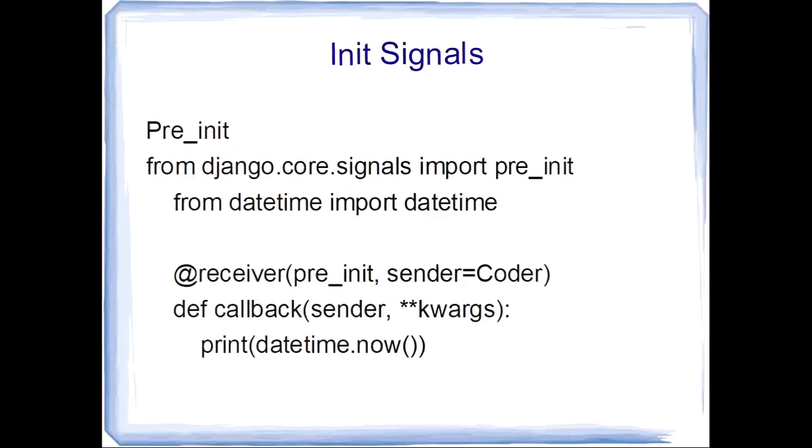Our first type of signal is init signal. It consists of two types: pre-init and post-init. Init signals are applicable for the __init__ method.